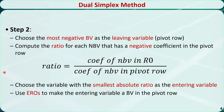In step 2, we need to choose the most negative basic variable as the leaving variable, and that row will be the pivot row. Then compute the ratio for each non-basic variable that has a negative coefficient in the pivot row. The ratio is the coefficient of a non-basic variable in row 0 over the coefficient of the non-basic variable in the pivot row. After that, we choose the variable with the smallest absolute ratio as the entering variable. We use elementary row operations (EROs) to make the entering variable a basic variable in the pivot row.